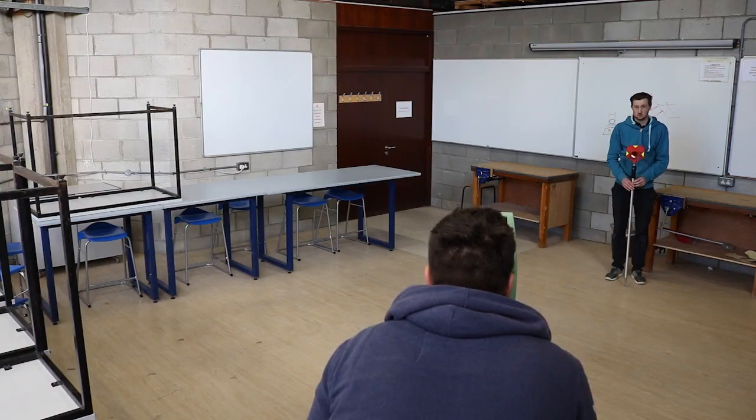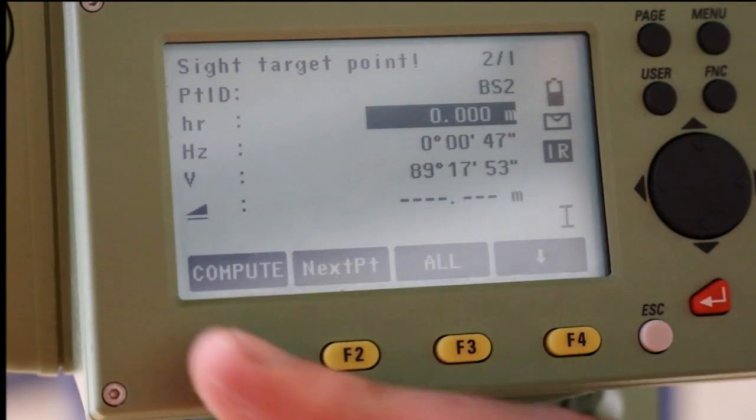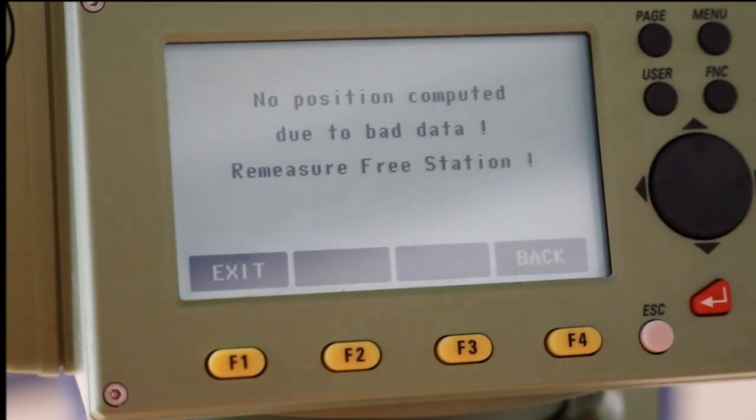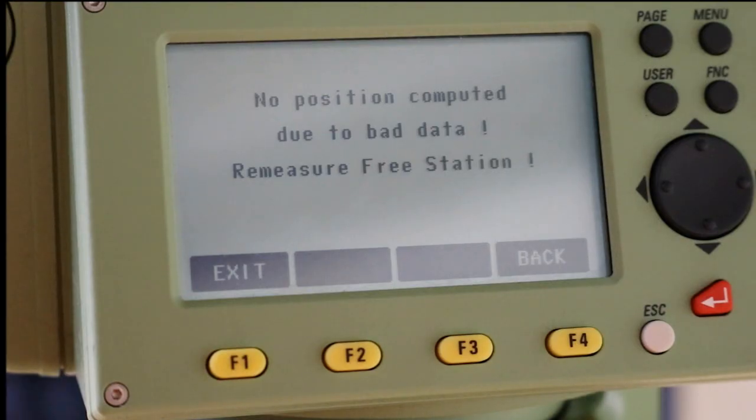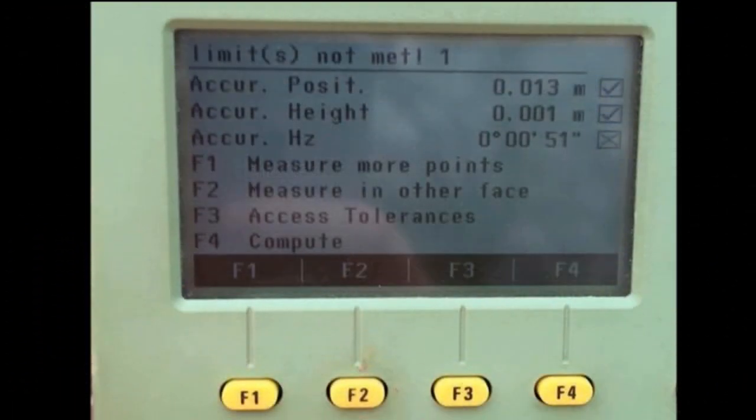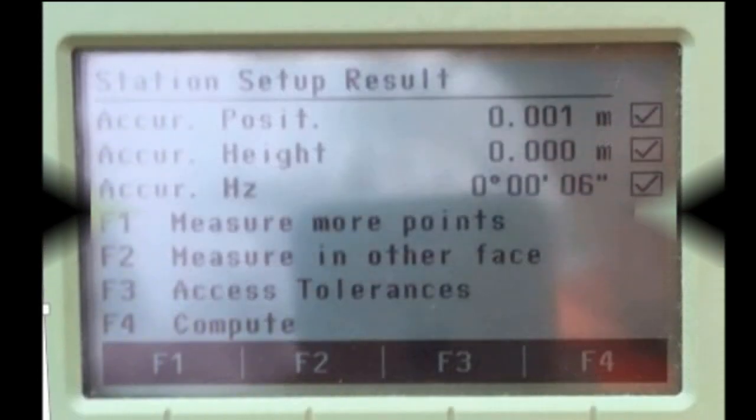If possible, you may want to use a third backside in this process. Press compute for the total station to calculate your position. If this screen or this screen appears, it means you'll have to redo your resection as your position is not accurate. This screen means your position is accurate and you may proceed.